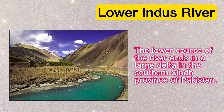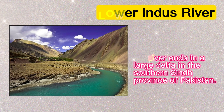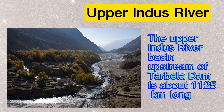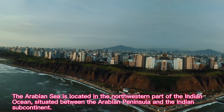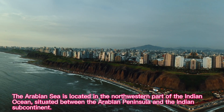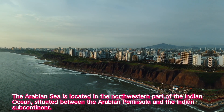The lower course of the Indus River ends in a large delta in the southern Sindh province of Pakistan. The upper Indus River basin, upstream of Tarbela Dam, is about 1,125 kilometers long. The Arabian Sea is located in the northwestern part of the Indian Ocean,